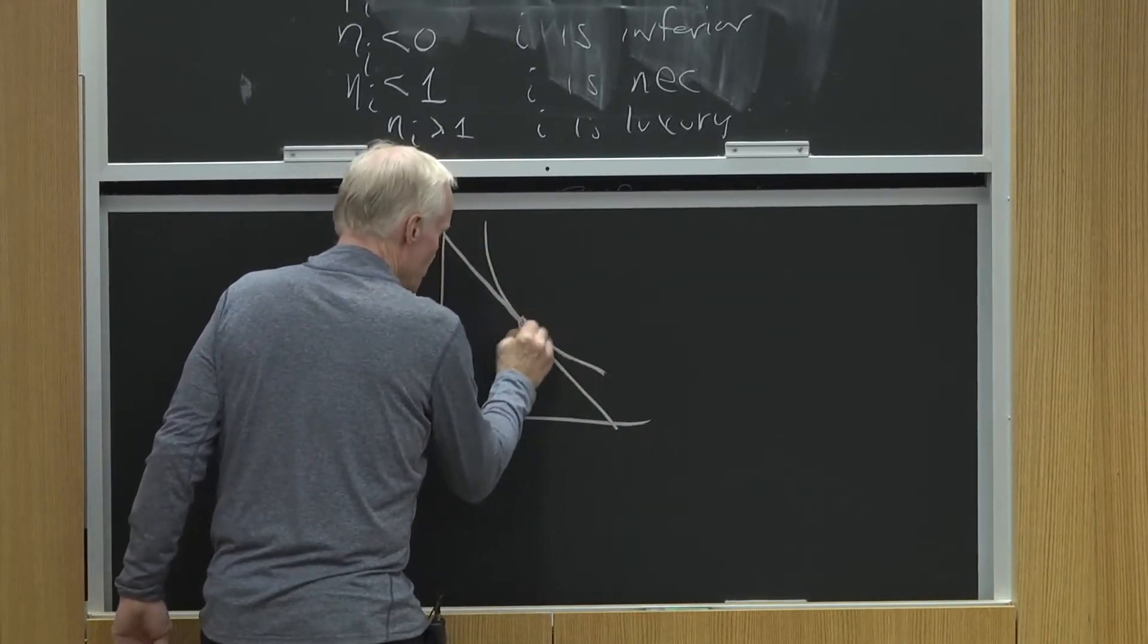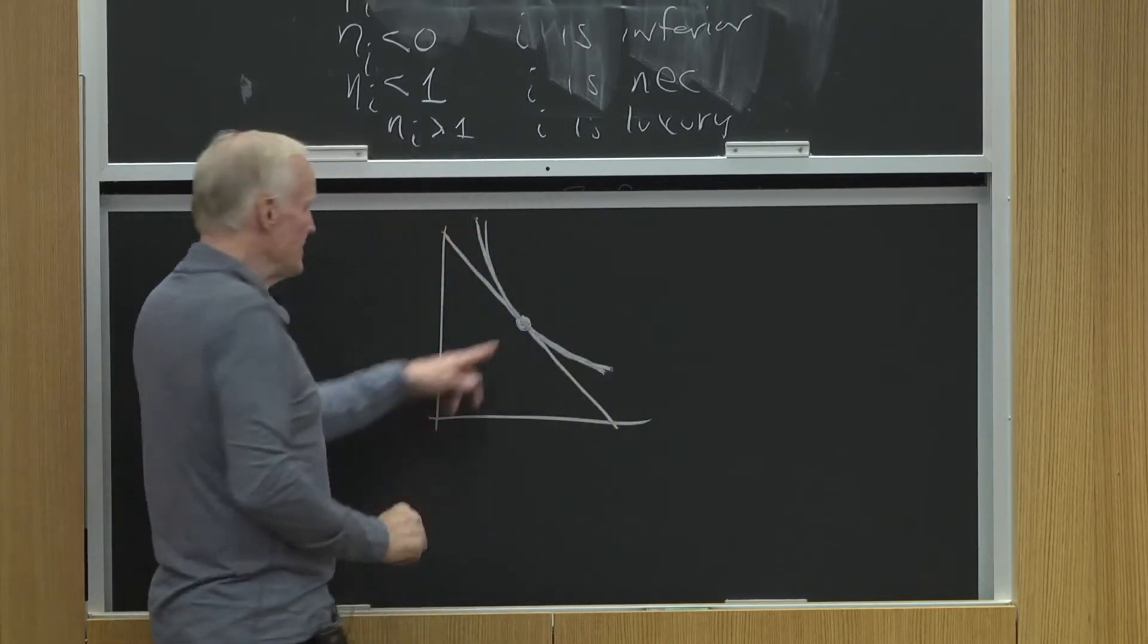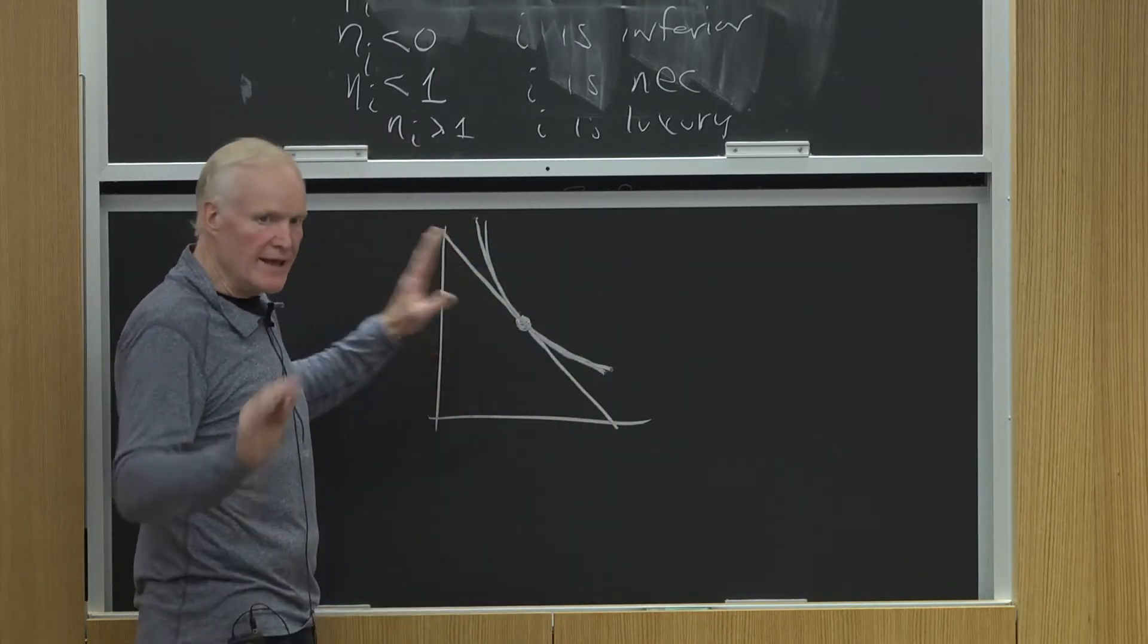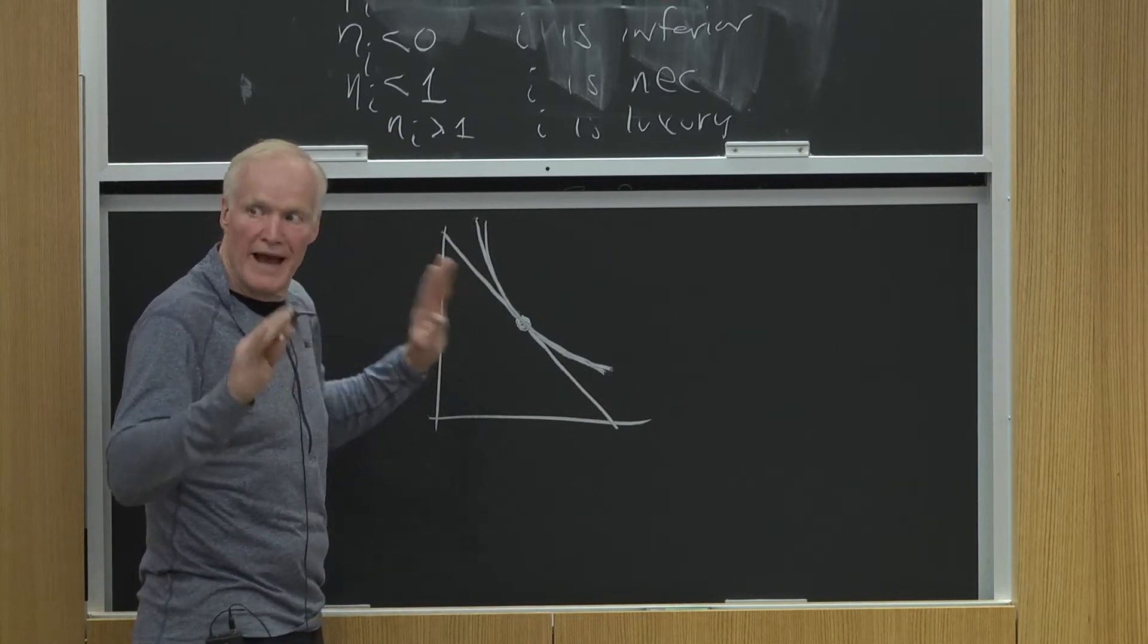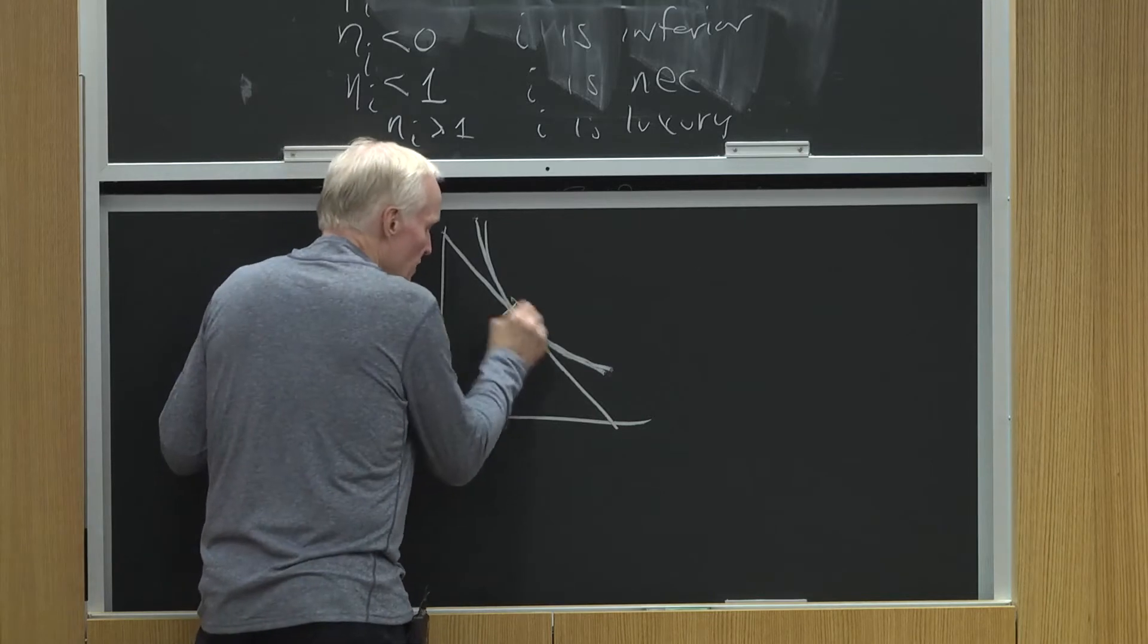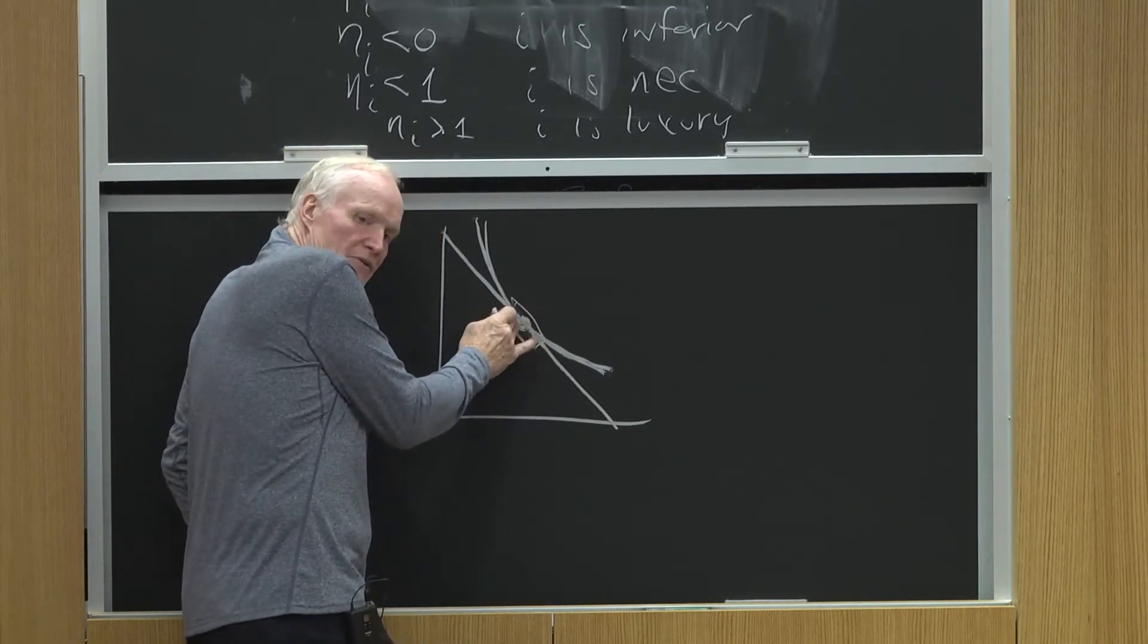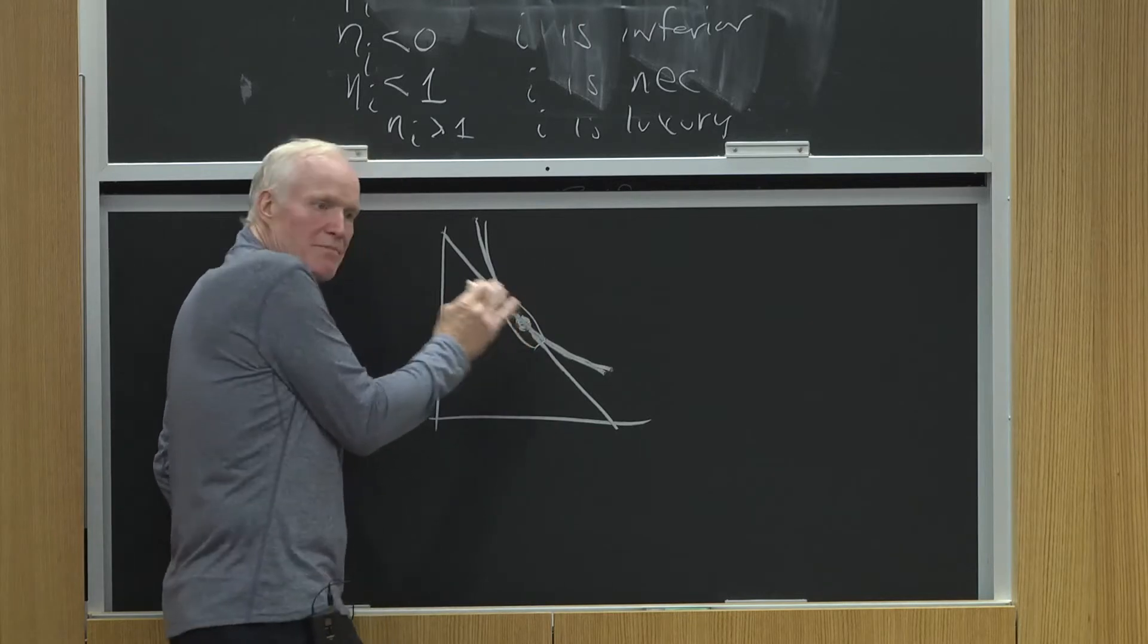He chooses this point. Now, I can't see that indifference curve. I just don't, just from this one choice. But I know enough about how he's making his choice to know that the indifference curve slope at that point is equal to that budget line. And that's the power of the theory.